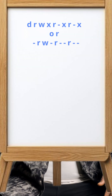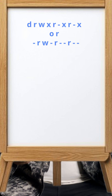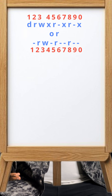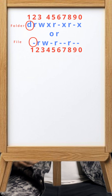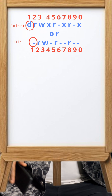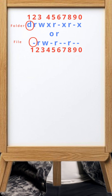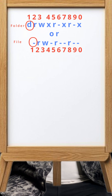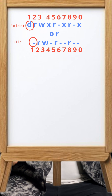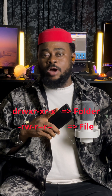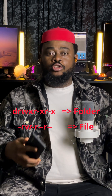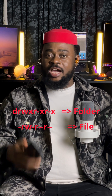The permission code has 10 letters. The first letter tells us whether na file or na folder. If na file, it go be dash. If na folder, it go be d — note that folder is also called a directory. So dash means file, and d means folder or directory. If you see d at the start, it means na folder; if you see dash, it means na file.